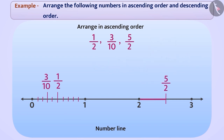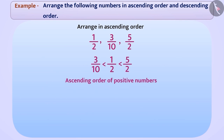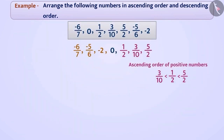By looking at the position of the three numbers on the number line, 5 by 2 is towards the extreme right, so it is a greater number than 1 by 2 and 3 by 10. However, 3 by 10 is towards the extreme left, so it is a smaller number than 1 by 2 and 5 by 2. By arranging these numbers from smaller to greater, we will get the ascending order. Now, can you compare the negative rational numbers and arrange them in ascending order?